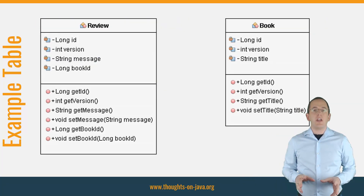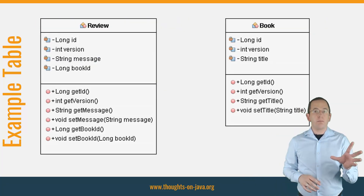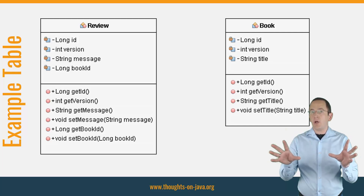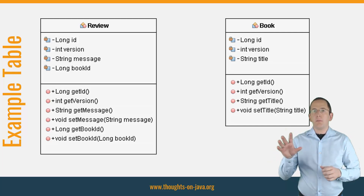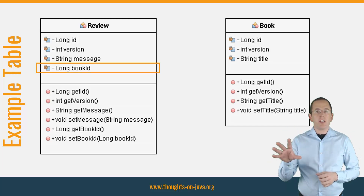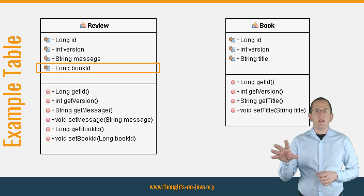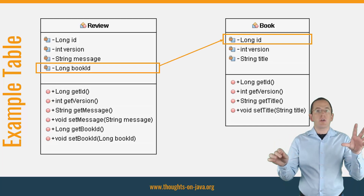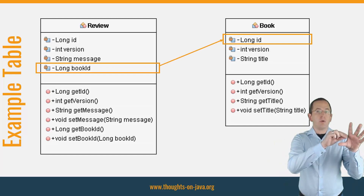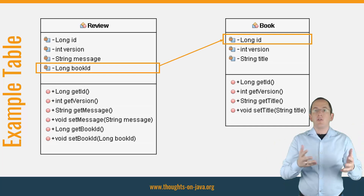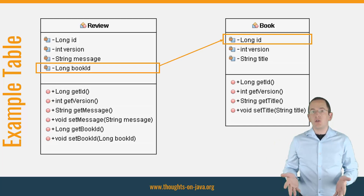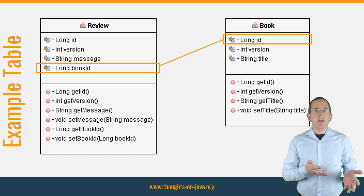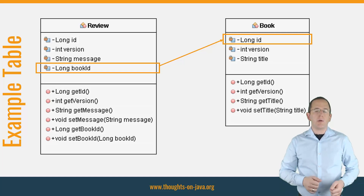Let's take a look at an example. I did not model an association between the book and review entities. But the bookId attribute of the review entity maps the foreign key to the book entity, so we could easily join the underlying database tables in an SQL query.